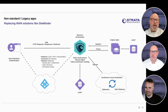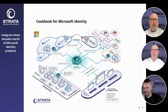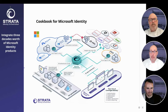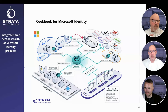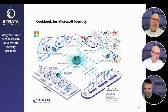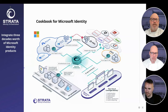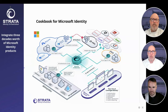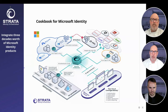Traditionally we've done this for a lot of our customers. This was just one recipe in the work that Strata has done for modernizing identity — in that case, migration of a legacy WAM system such as SiteMinder or Oracle Access Manager to a modern cloud one like Entra ID. What we announced just earlier this week is a new cookbook. A cookbook does contain recipes, but it contains a lot more — additional functionality and capabilities that allows you to take full advantage of your existing investment in Microsoft services.